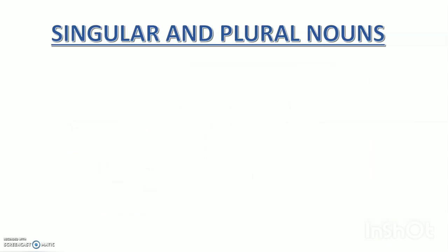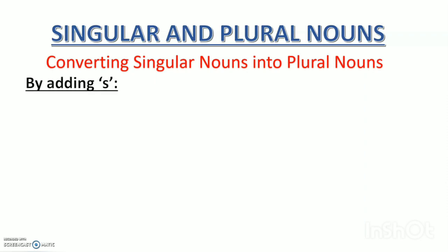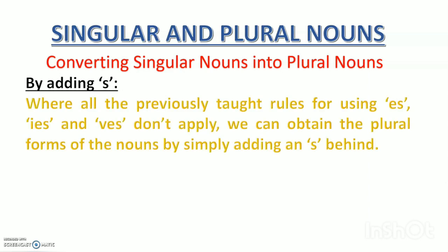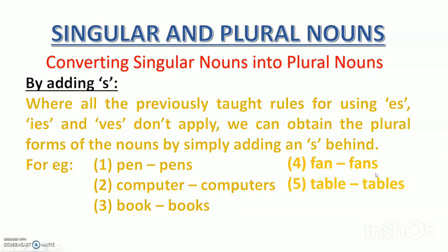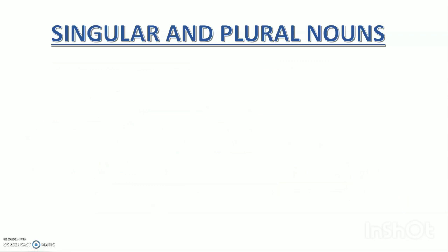Now let's move to the next way — adding S. You've been doing this since first and second standard. When all the other rules — ES, IES, VES — don't apply, we simply add S behind to get the plural form. For example, pen → pens; computer → computers, like in our computer lab; book → books; one fan, many fans; one table, many tables. These are examples of just adding S.